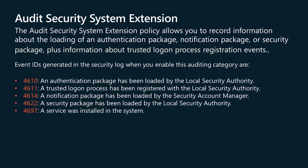The Audit Security System Extension policy allows you to record information about the loading of an authentication package, notification package or security package, plus information about trusted logon process registration events. Changes to security system extensions in the operating system include the following activities: security extension code is loaded, for example an authentication, notification or security package; security extension code registers with the local security authority and will be used and trusted to authenticate logon attempts, submit logon requests, and be notified of any account or password changes — examples include security support providers such as Kerberos and NTLM. A service is installed: an audit log is generated when a service is registered with the service control manager, and contains information about the service name, binary, type, start type, and service account. Attempts to install or load security system extensions or services are critical system events that could indicate a security breach.